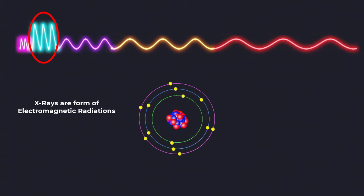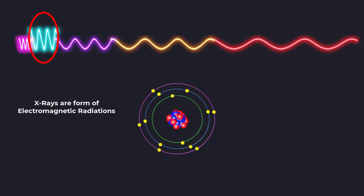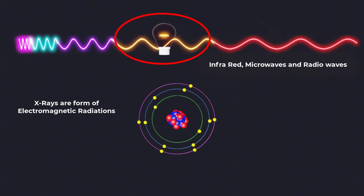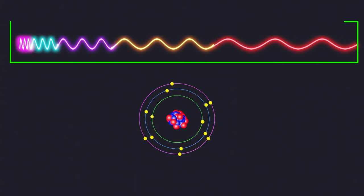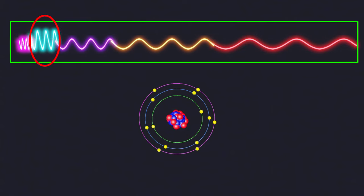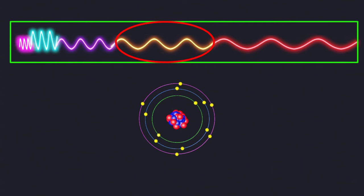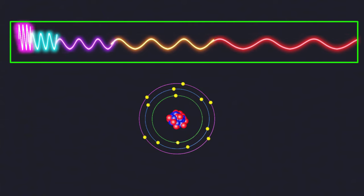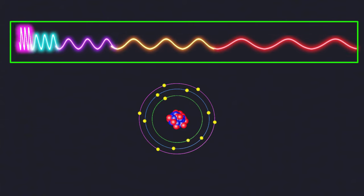X-rays are a form of electromagnetic waves, just like visible light, radio waves, and microwaves. In the electromagnetic spectrum, X-rays have higher energy than visible light but lower energy than gamma rays, making them the second most energetic type of radiation in the spectrum.